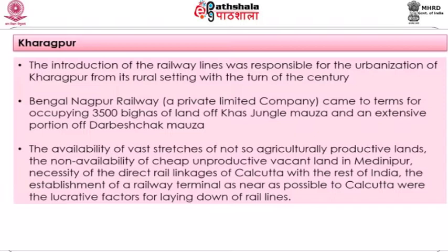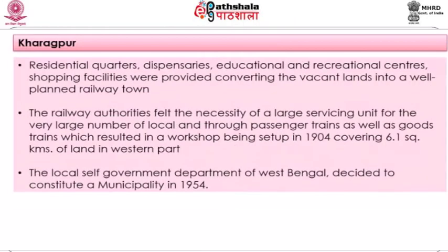The railway terminal was established because of the necessity of direct rail linkages of Calcutta with the rest of the country. With the railway terminal, the railway town of Kharagpur was planned with residential quarters, dispensaries, educational and recreational centers, and shopping facilities. The railway authorities felt the necessity of a large servicing unit for the very large number of local, through passenger, and goods trains, which resulted in a workshop being set up in 1904, covering about 6.1 square kilometers in the western part of the town.